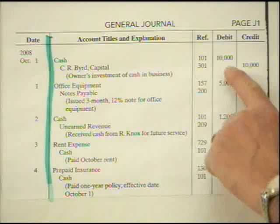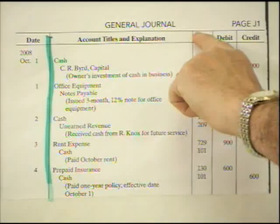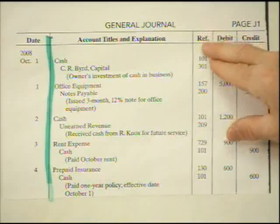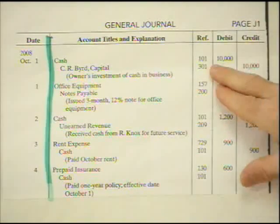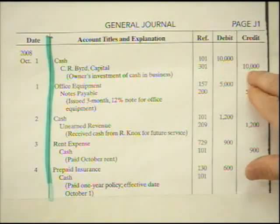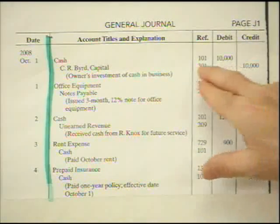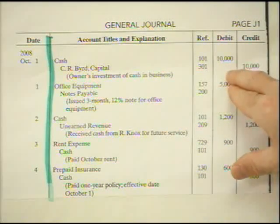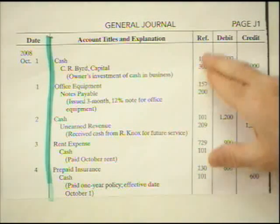Notice that the debit column will always equal the credit column. When it comes to the reference column, these amounts are posted to the general ledger accounts, and afterward you come back and put the general ledger account number in the reference column — that tells you the amounts have been posted. For most of the work you'll do for me, I'll only want journal entries without the reference column numbers.